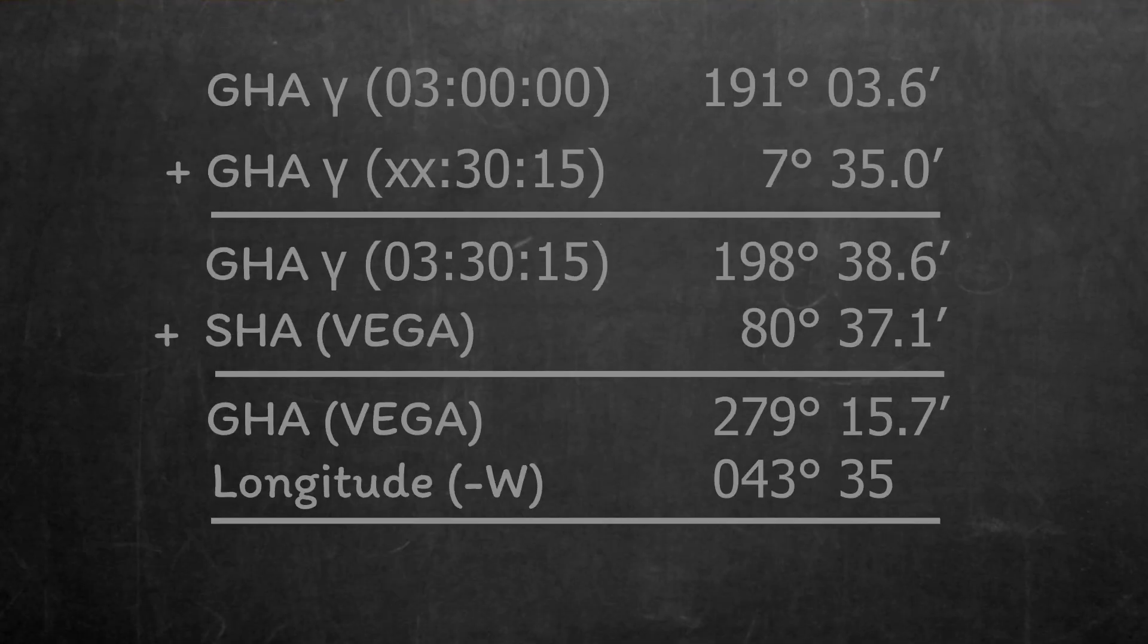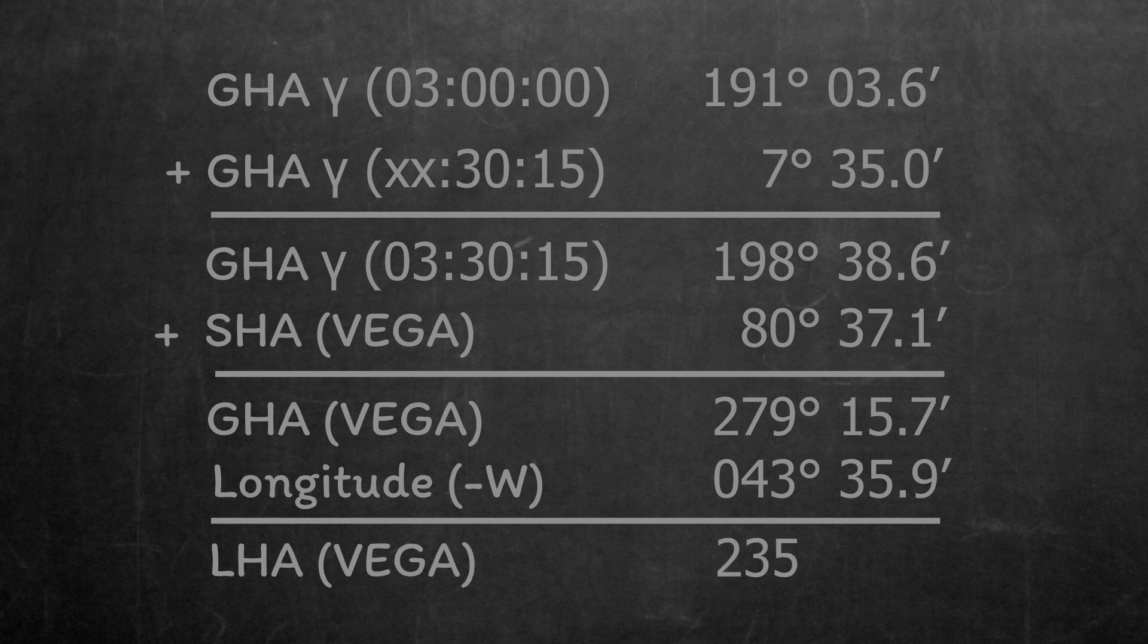So, in our case, we find the Local Hour Angle of Vega is 235 degrees, 39.8 minutes.